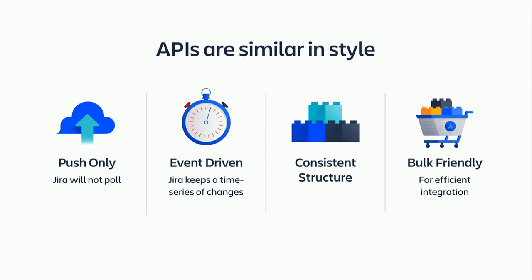The APIs are event-driven in style — we basically want notifications of updates: a build has started, a build has paused, a build has finished. By having all these events, when you want to query the data, you can do analytics: in this project, how long are the builds taking? How long does a deployment take from beginning to end? Tracking the time series allows you to do that.